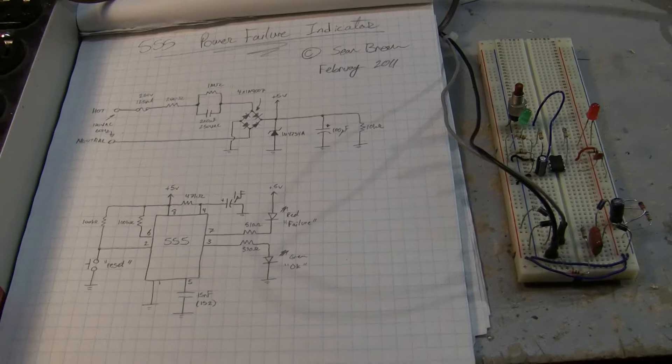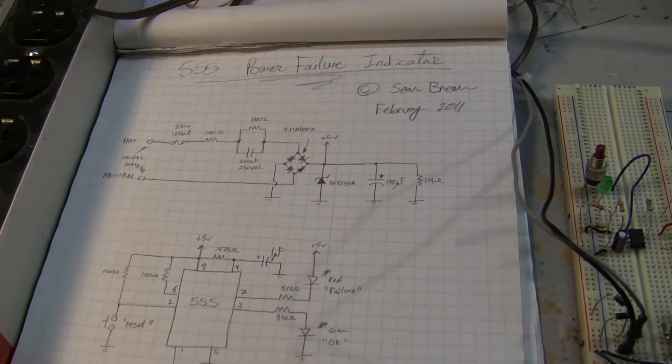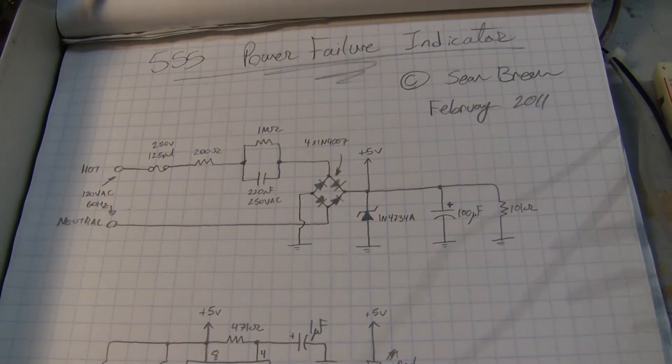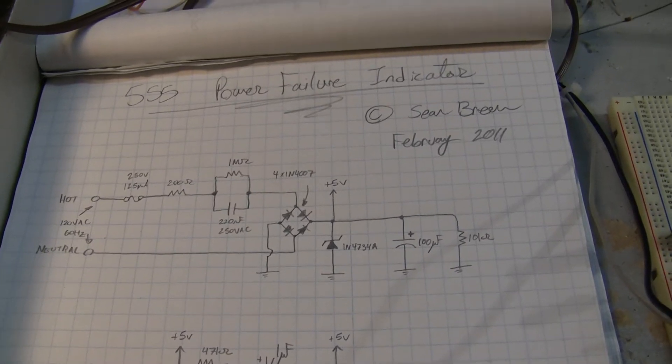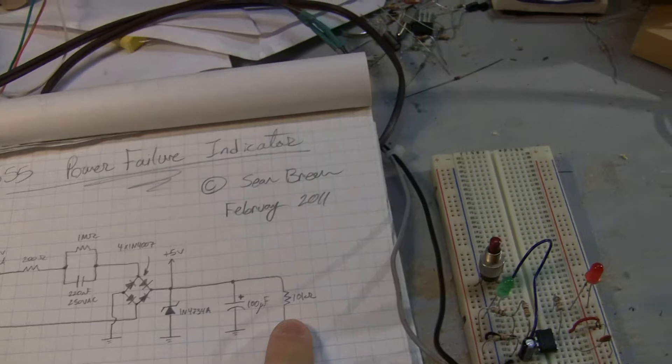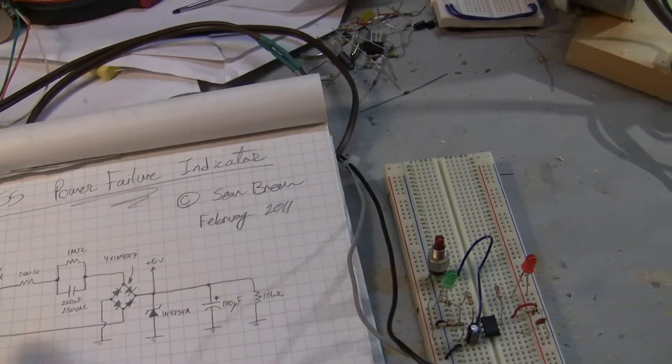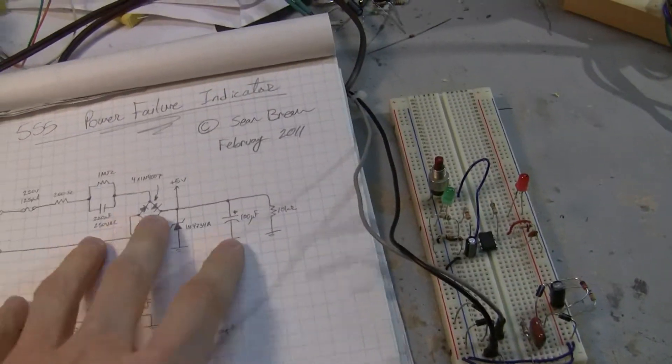I'm using the 555 pretty much just as an RS latch, nothing overly complicated but kind of interesting. So we can see up here I've got a transformless power supply, so this runs right off 120 volts AC, siphons about 5 volts off with a zener regulator. You can see it's filtered with the capacitor and a bleeder resistor. That resistor is actually very important to make sure that when the power fails, this capacitor discharges properly.